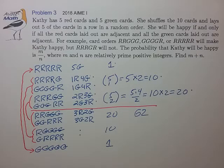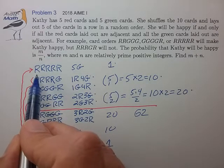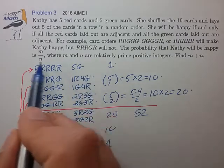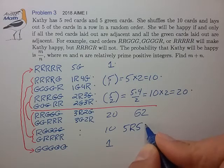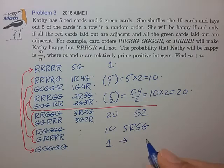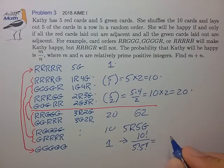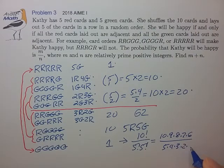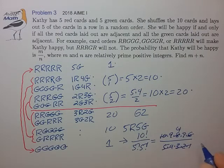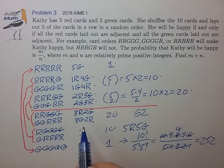Now we need to figure out how many ways we can deal out all 10 cards as an entire list. We have 5 red cards intermingled with 5 green cards, and the number of ways to deal that out is 10 factorial over 5 factorial times 5 factorial. Doing some cancellations — 10 times 9, simplifying — that's 9 times 4 times 7, which equals 252. That is the total number of ways to deal out 5 red and 5 green cards in a row.